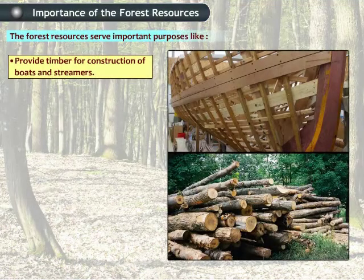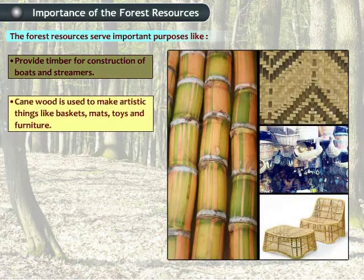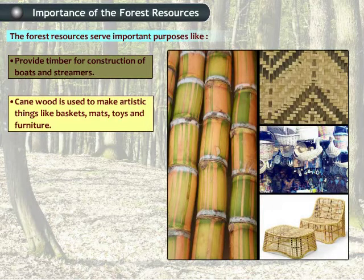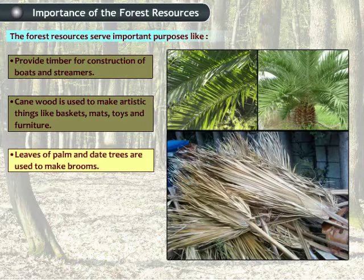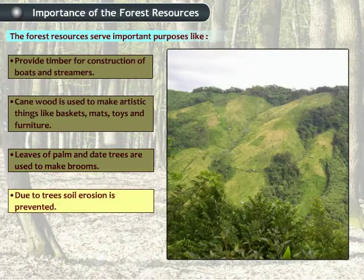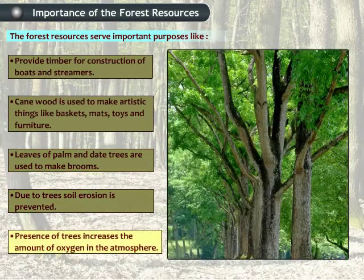They provide timber for construction of boats and steamers. Cane wood is used to make artistic things like baskets, mats, toys and furniture. Leaves of palm and date trees are used to make brooms. Due to trees, soil erosion is prevented. The presence of trees increases the amount of oxygen in the atmosphere.